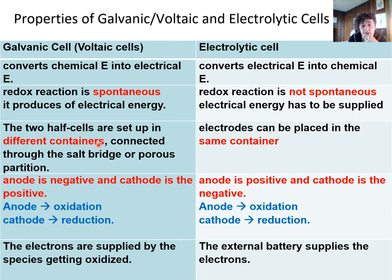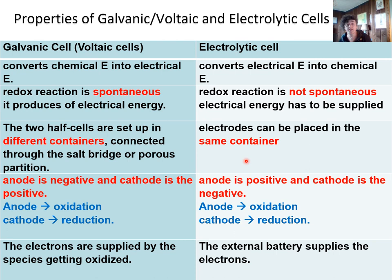For galvanic cells, it's critical that the two half-cells are separated to avoid mixing—otherwise you'd have a short circuit. They need different containers but must maintain electrical continuity through a porous separator or salt bridge. For electrolytic cells, separation is not critical; in fact, the one shown in the lab video does not have two separated compartments—it's not a requirement.